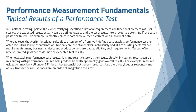In functional testing, let's start from there — what happens in functional becomes quite difficult when it comes to non-functional. In functional testing, particularly when verifying specified functional requirements or functional elements of user stories, the expected results can usually be defined clearly and the test results interpreted to determine if the test passed or failed. From an agile perspective, every user story must have clear acceptance criteria, and with functionality broken into simple forms, the acceptance criteria can also be well defined. For example, a monthly sales report shows either a correct or incorrect total — very straightforward — but when it comes to performance, things are not so straightforward.